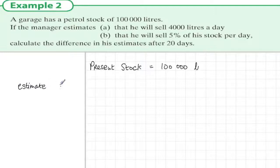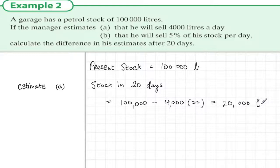Let's look at estimate A. This is straight line depreciation. So what would the stock be in 20 days? Well, it would be 100,000, what it is at the moment, minus 4,000 every day, so 4,000 by 20. So this is 100,000 minus 80,000, which is 20,000 litres. This is the final answer.